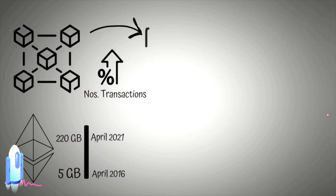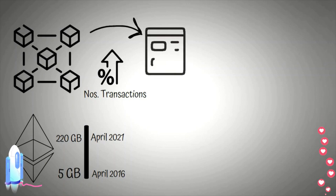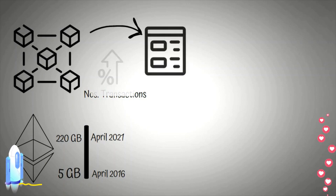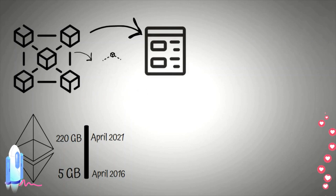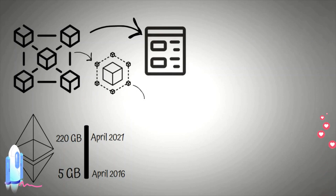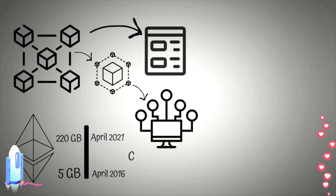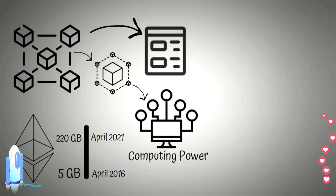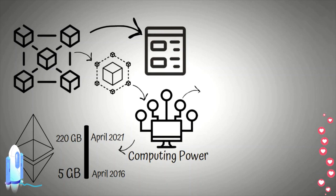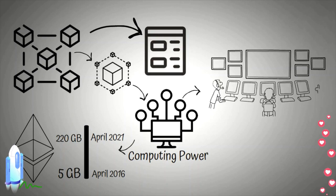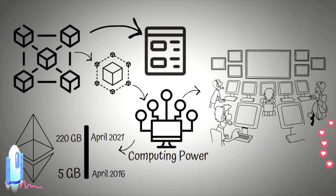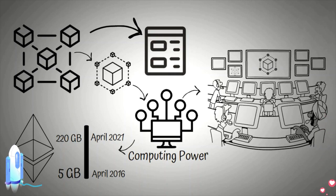Because blockchains are decentralized ledgers of historical transactions, running a node — which stores the entire history of the blockchain — has required greater computing power and energy as the blockchain grows. This has often made it increasingly difficult for average users to participate in the upkeep of the blockchain. Many believe this might have opened the blockchain to centralization risk, as those with the greatest computing power are most efficient in managing the large size of the chain.